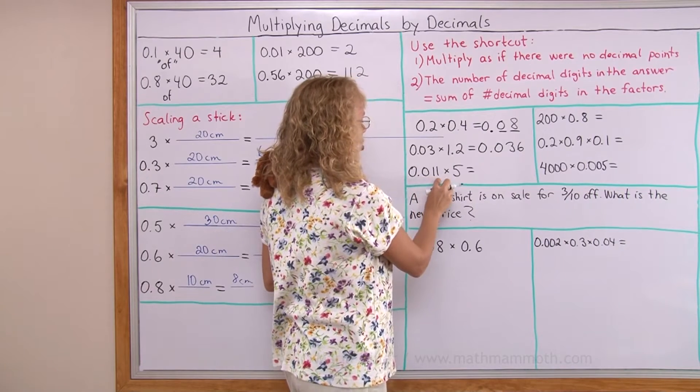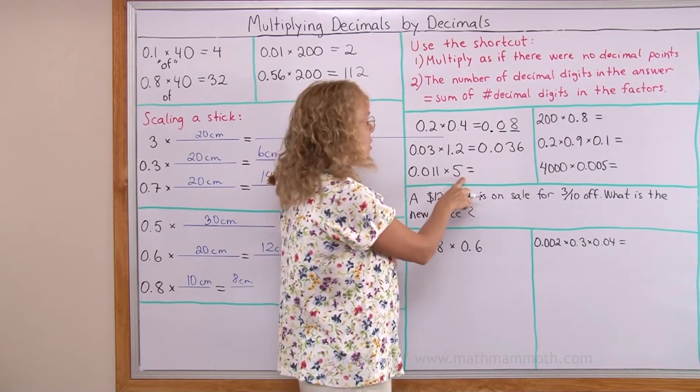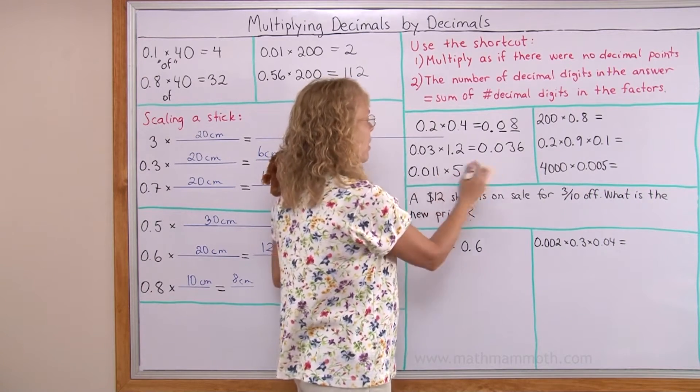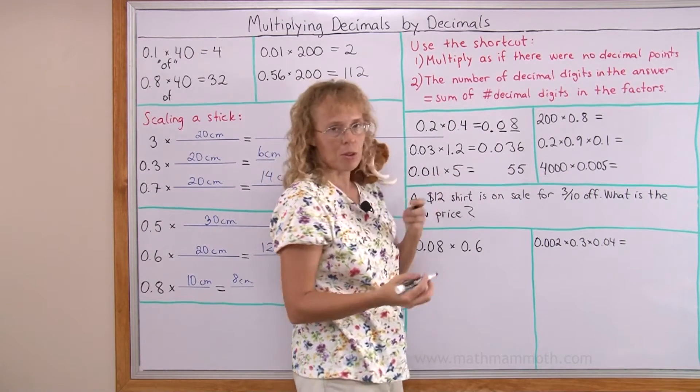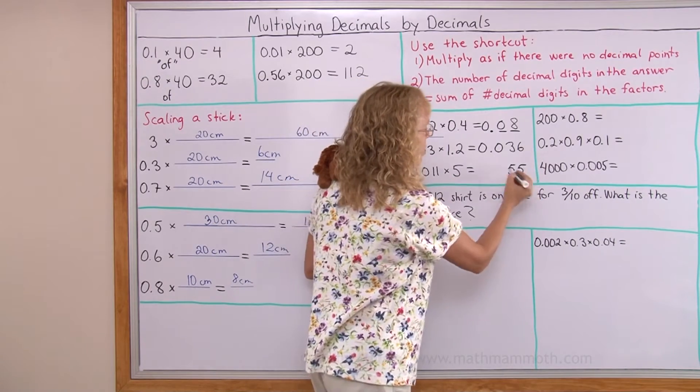Here I have one, two, three decimal digits. And zero decimal digits here. Okay? Eleven times five, fifty-five. And three and zero. So three decimal digits here. One, two and three.